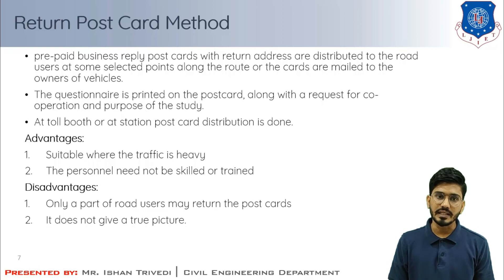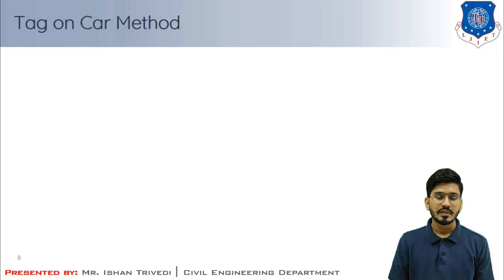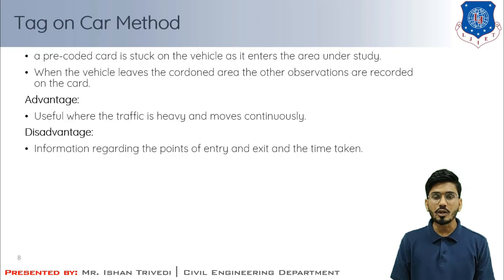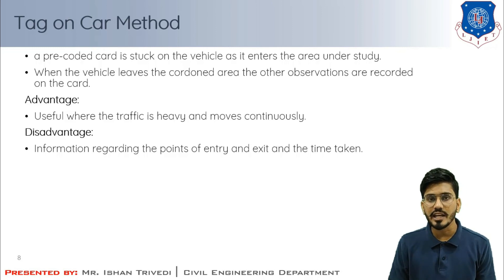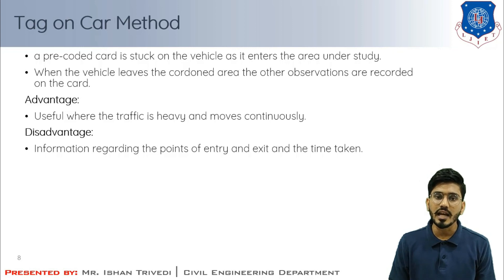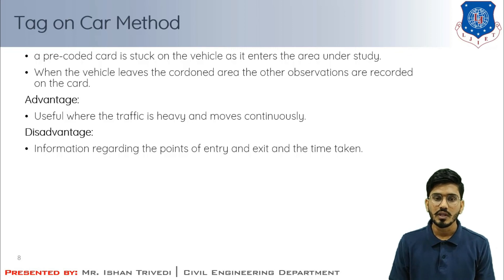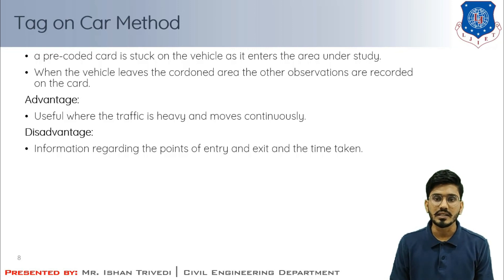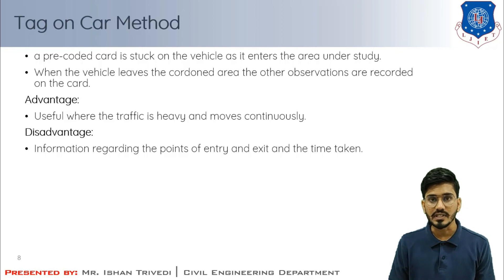The next method is the tag on car method. In this method, a pre-coded card is stuck on the vehicle as it enters the area under study. When the vehicle leaves the cordoned area, observations are recorded on the card. This method is useful where traffic is heavy and moves continuously. However, it gives only information regarding the points of entry and exit and the time taken to traverse the area, which is one of its disadvantages.